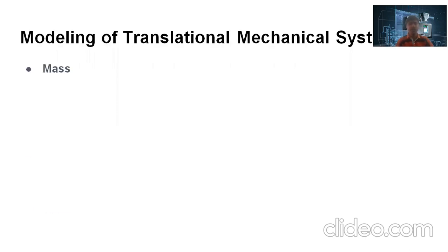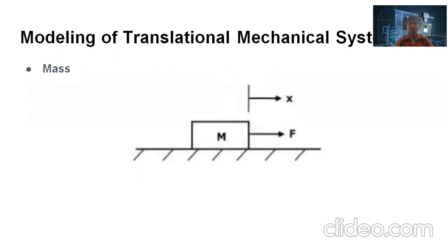Before going to the modeling, let us know what are the basic components used in translational systems. The first one is mass. This is the physical model of the mass. It is considered that the mass of the body is concentrated at the center of the element. When the force is applied on the mass body, there is a displacement in the same direction of the force applied.